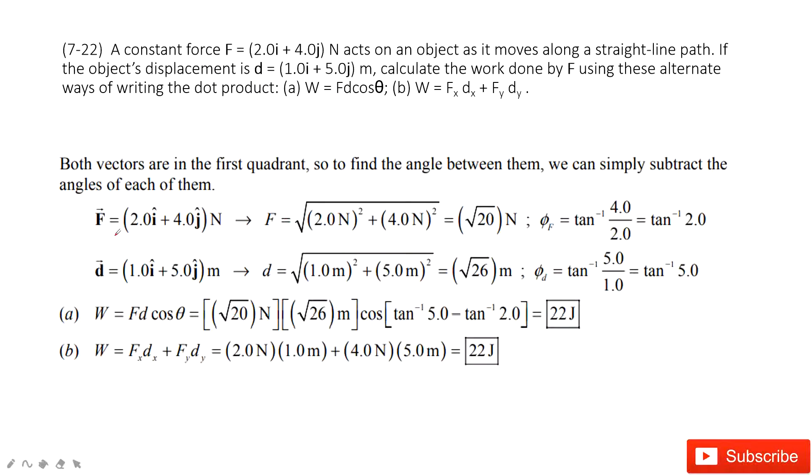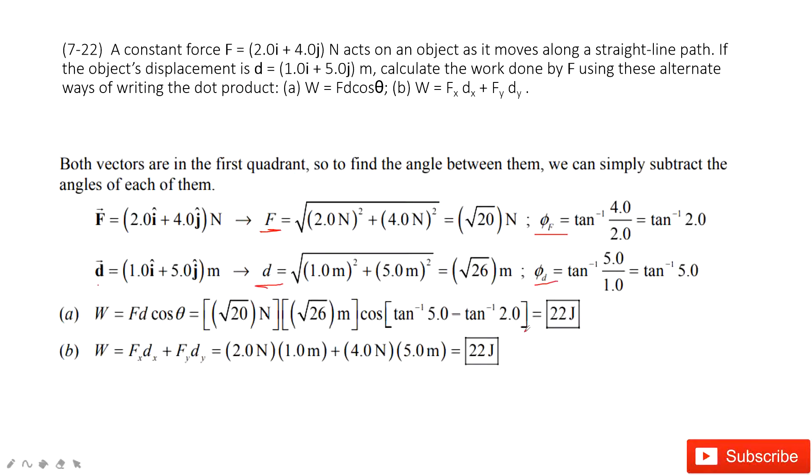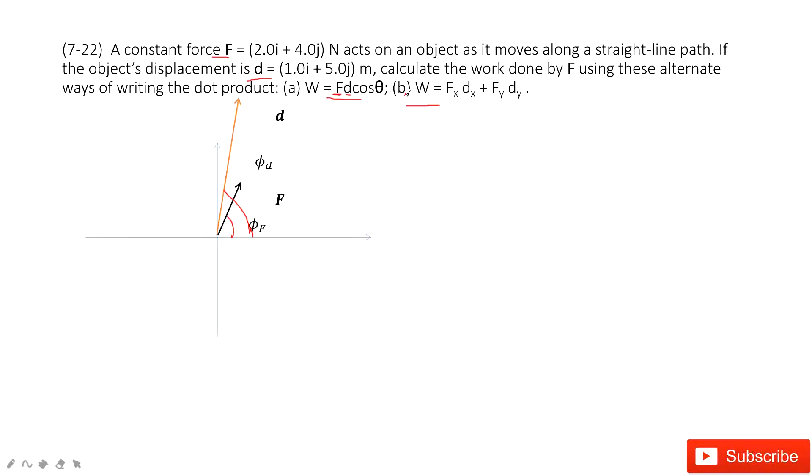So in this one you can see first thing you find the magnitude for f and then you find the magnitude for d. And then for each one you can get its angle with x-component. And then this angle theta is just using phi f minus phi d. Sorry, the phi d minus phi f. And then you get the final answer. Another way is more easy.